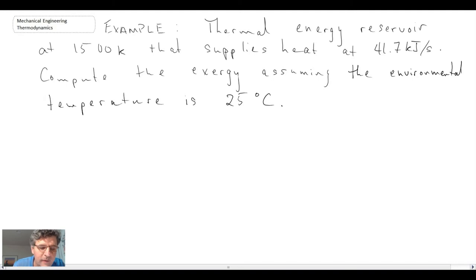We have our problem statement and we're told that we have a thermal energy reservoir, a source at 1500 Kelvin supplying heat flow in the amount of 41.7 kilojoules per second. What they want us to do is calculate the exergy or the reversible work potential assuming the environmental temperature is 25 degrees Celsius, which we had mentioned earlier was the dead state, but we'll just take it as 25 degrees C for now.